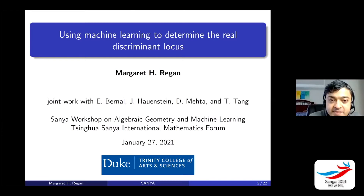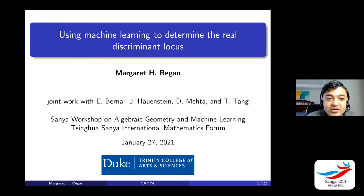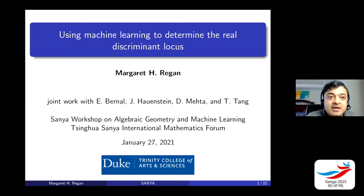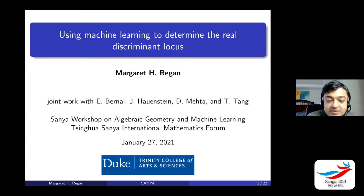The next speaker is Margaret Reagan, or Maggie, as we call her. She's at Duke — she's a postdoc there. She was at Notre Dame previously. She's going to talk about using machine learning to determine the real discriminant locus, essentially machine learning applied to math rather than the other way around. I'll give it to Maggie.